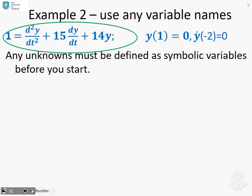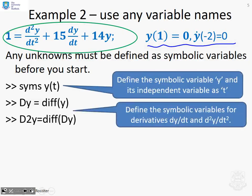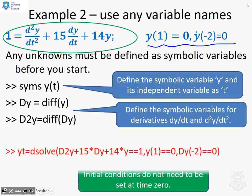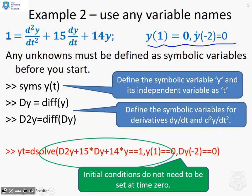Example 2, and this is just to demonstrate that you can use any variable names you like. So here I've written the differential equation as 1 = d²y/dt² + 15 dy/dt + 14y, and again a few initial conditions on the right-hand side. So again we define our symbolic variables, which here are going to be y, dy/dt, and d²y/dt² using the MATLAB notation: syms y(t), Dy = diff(y), and D2y = diff(Dy). And then we simply use the dsolve statement exactly the same as on the previous slide. Now the other subtlety we've put in here just for completeness is you'll notice that I've set one of the initial conditions not to be based at time 0, and I've shown that in the bottom command as well.